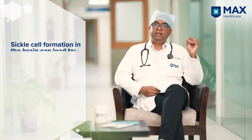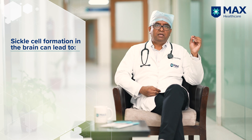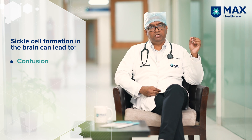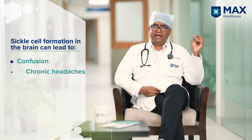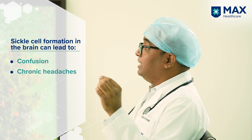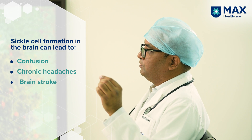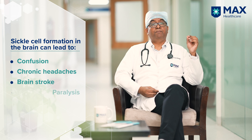Sickle cell is a blood disorder and, as we know, blood flows from head to toe. So wherever these sickle cells are formed, that body part will get affected. If the sickle cells are forming within the capillaries of the brain, the patient will generally present with confusion, headaches, or chronic headaches. In severe cases, it can cause stroke, and stroke, as we know, can cause paralysis. It is a severe morbidity.